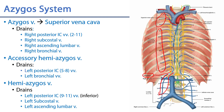The azygous vein also has two tributaries coming from the left side: the accessory hemiazygous and the hemiazygous. The accessory hemiazygous typically drains intercostal spaces 5 through 8, whereas the hemiazygous drains intercostal spaces 9 through 11 plus subcostal plus ascending lumbar. These veins typically drain directly into the azygous vein, but sometimes may form a common trunk, or you might see neither and those posterior intercostal veins may drain directly into the azygous system.